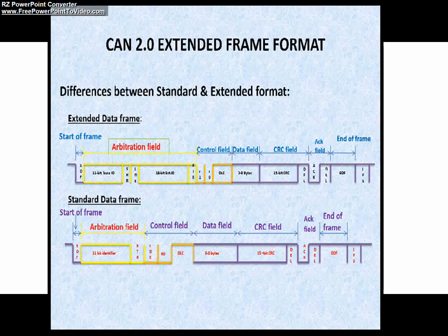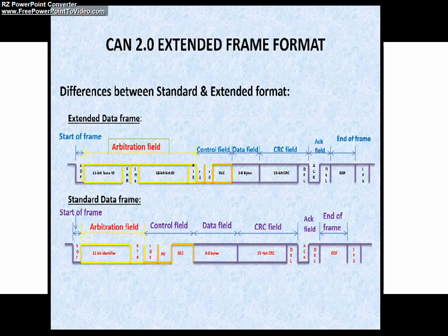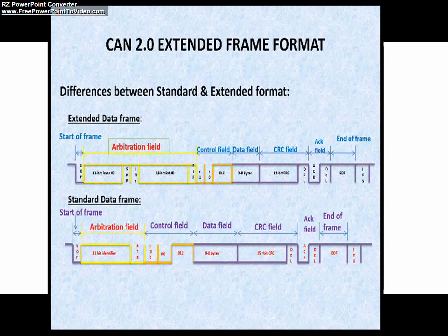You may ask why do we need the extended frame format. Because vehicles like trucks may require more identifiers in their network. As the standard format of CAN can provide only 2048 identifiers, the extended format of CAN is used in such vehicle networking scenarios.